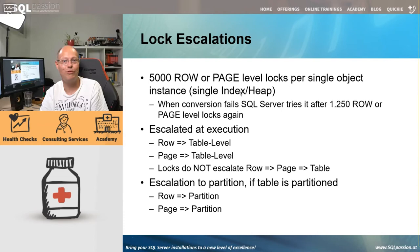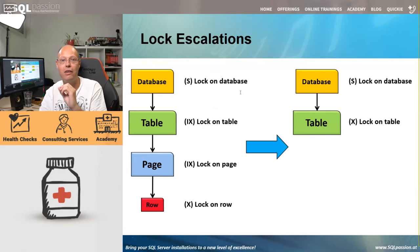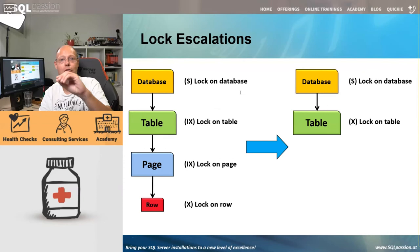Now to the key point: a lock escalation will only happen in SQL Server when it's possible from a locking perspective. A lock escalation would never block in SQL Server — that would be counterintuitive. Imagine wanting to perform a lock escalation to improve performance and running into a blocking situation in the process — that would be terrible. So SQL Server only tries a lock escalation if it succeeds; otherwise, SQL Server just continues acquiring locks at the row level.